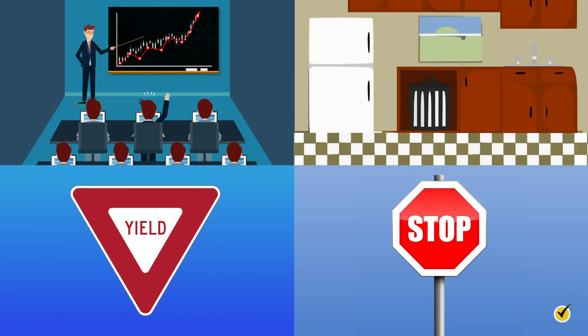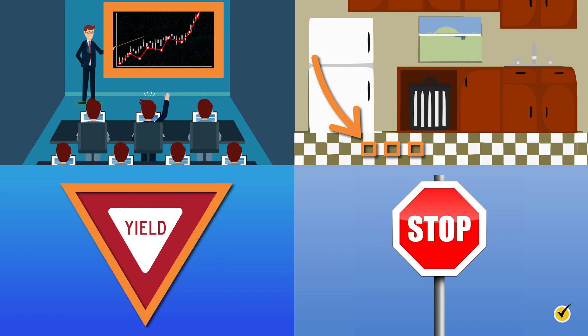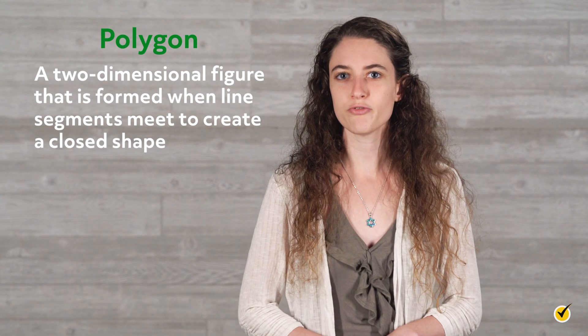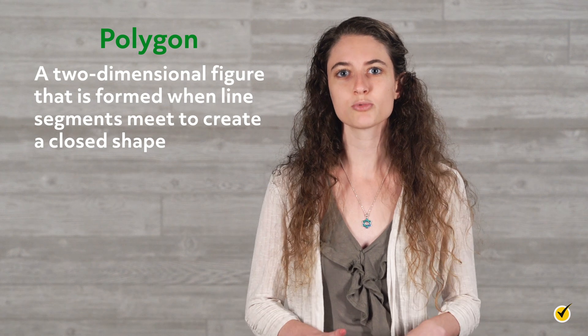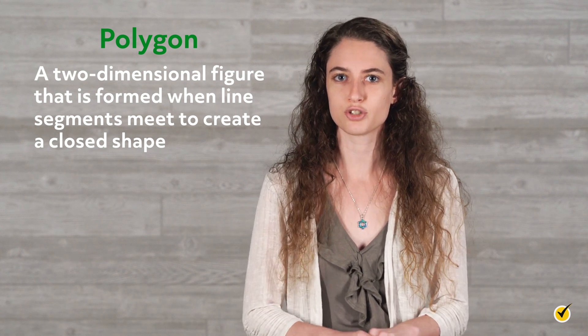Polygons are everywhere we look. The board in the classroom is a rectangle and the floor tiles are squares. The yield road sign is a triangle and the stop sign is an octagon. A polygon is a two-dimensional figure that is formed when line segments meet to create a closed shape.